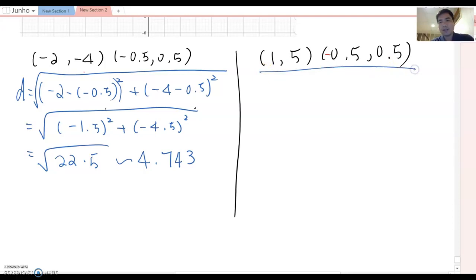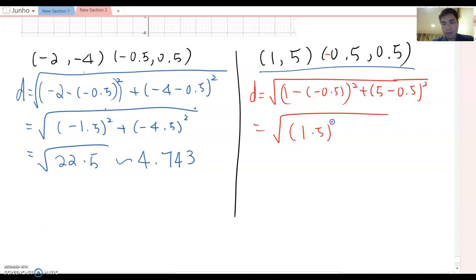Let me try the right side one too. I am going to use a different color so you can see a little better. So d equals square root of 1 minus negative 0.5 squared plus 5 minus 0.5 squared. So in this case, square root of 1.5 squared plus 4.5 squared. Therefore, this also comes out to square root 22.5. So we approximate this also becomes 4.743 here.